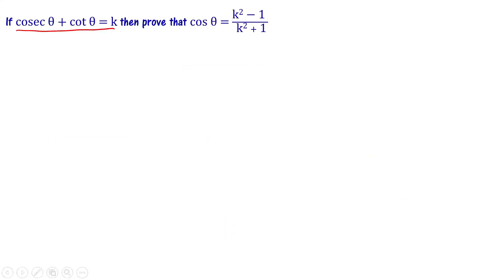If cosec theta plus cot theta equals k, then prove that cos theta equals k squared minus 1 divided by k squared plus 1. So let us start with the given expression: cosec theta plus cot theta equals k.